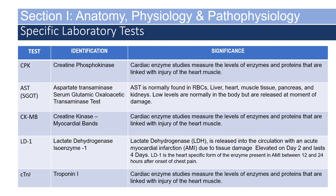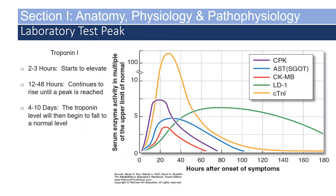These are specific laboratory tests available primarily at the receiving facility that may not be available to EMS on scene. Troponin I is one of the more frequently used laboratory tests at the emergency department to determine if a patient is experiencing a cardiac event. It starts to elevate within two to three hours of the event, continues rising to a peak between 12 and 48 hours, and then falls to normal within four to ten days. This gives the emergency department an idea of when the cardiac event started and where the patient is in their event.